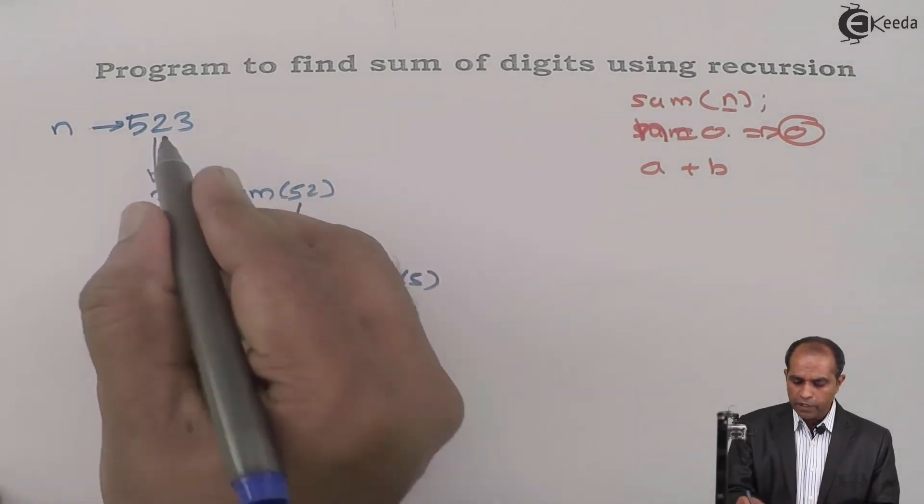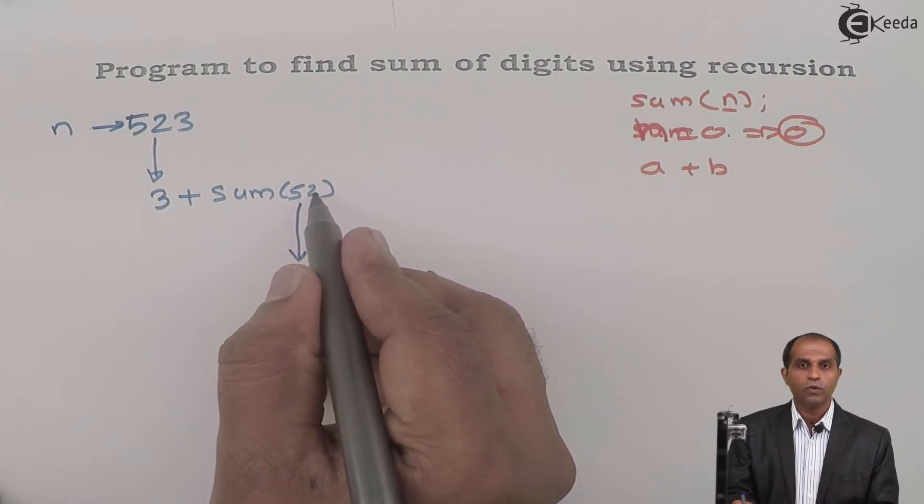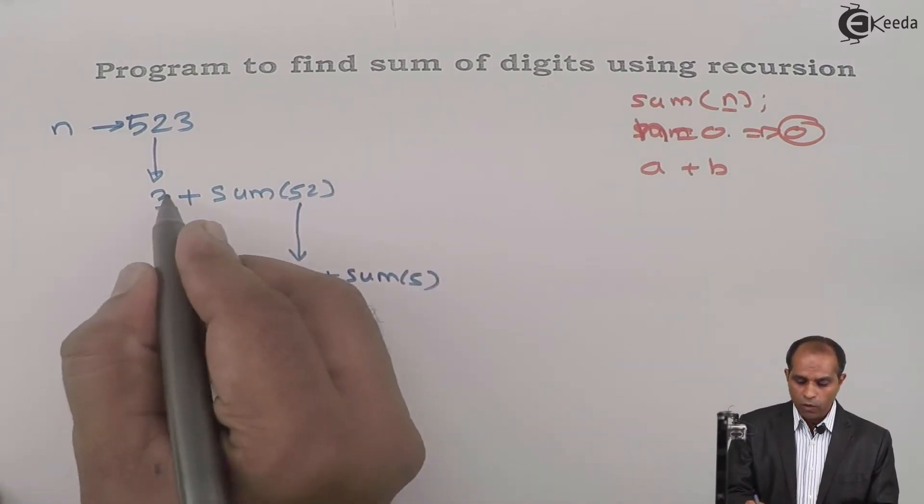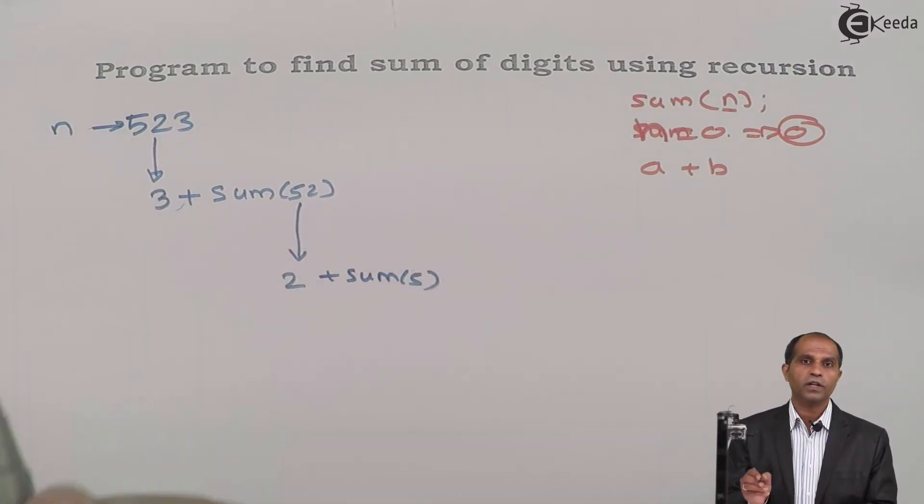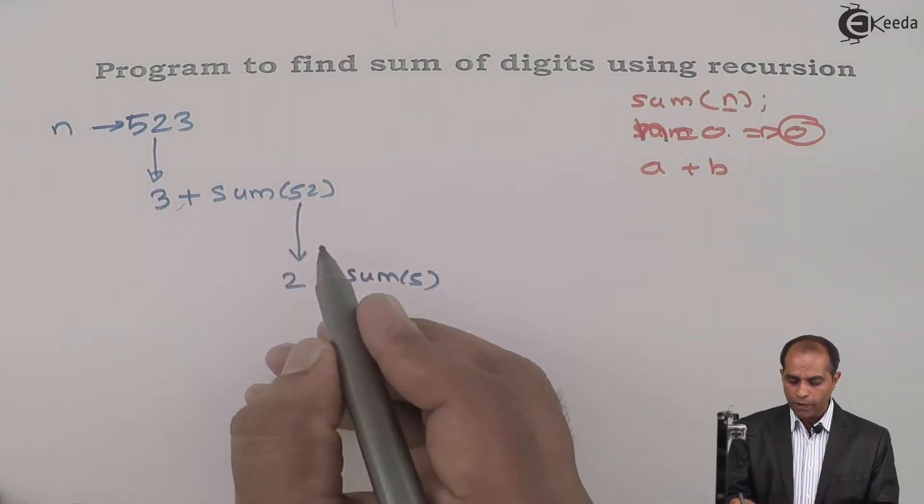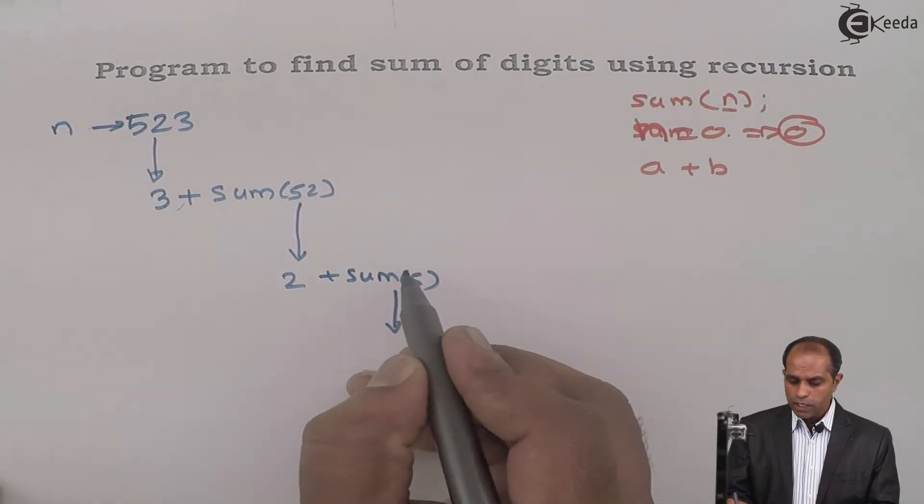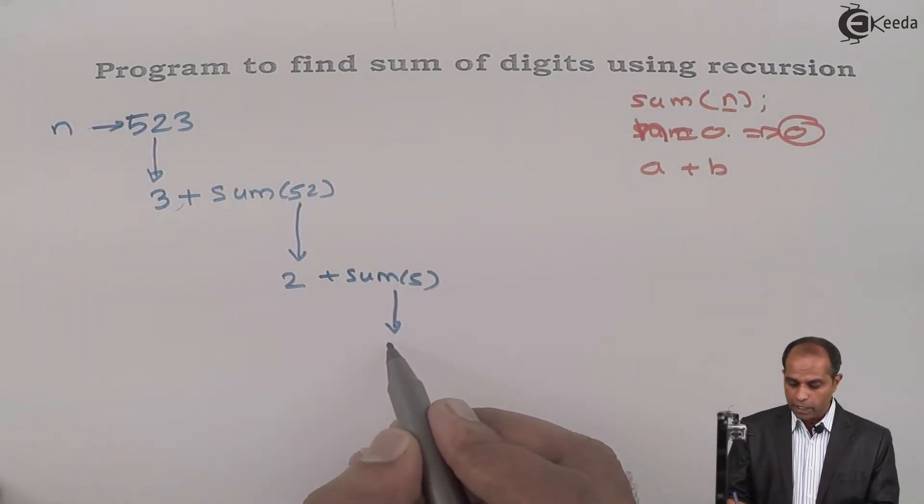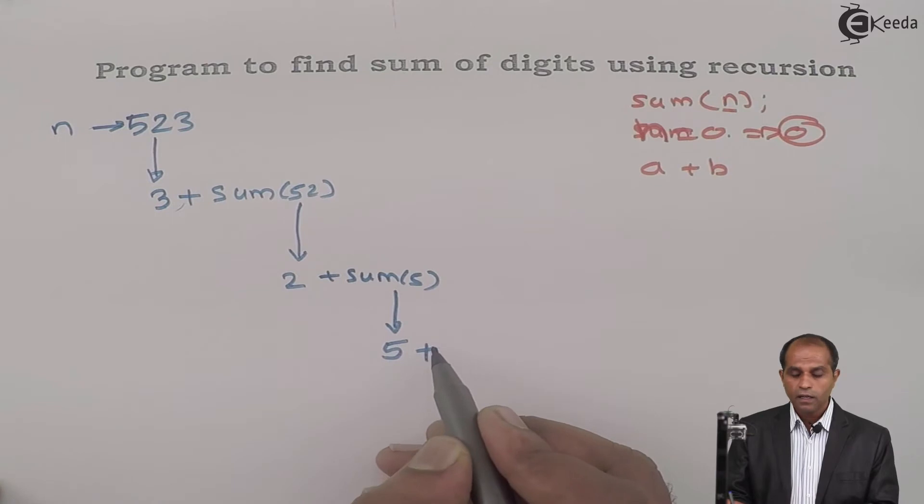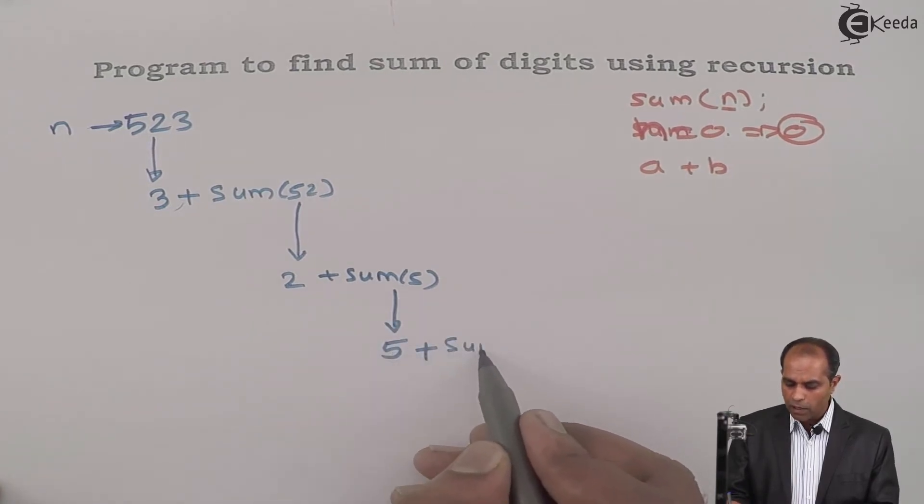And then you'll ask someone to find sum of 5. So 523, from that, how do I get 52? You'll divide the number by 10. And how do I get this particular 3? Mod of 10. So 3 plus sum of 52, then 2 plus sum of 5. Then what do you say? So you said sum of 5. I don't know what is sum of 5, but I can extract 5 and I'll ask you to find sum of 0.